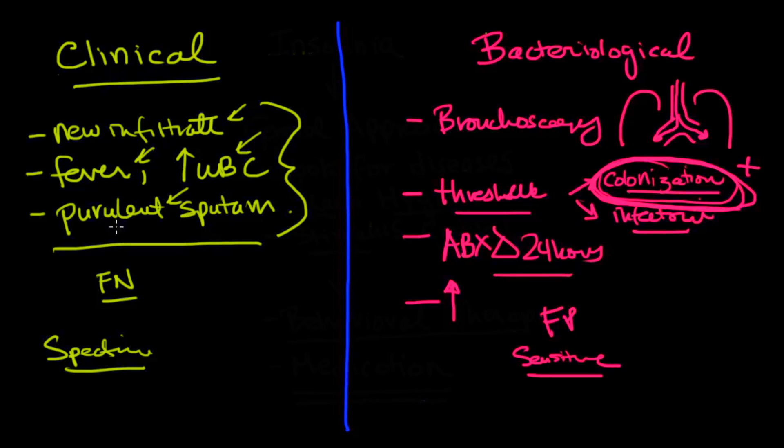In terms of what you should choose, the IDSA guidelines say you could use either one. Both are appropriate. Both are standard of care. If you don't have somebody doing bronchoscopy, then the bacteriological strategy is something you can't do. The clinical can be done fairly cheaply, and it can be done just about anywhere. The key is that if you're going to track ventilator-associated pneumonia rates in your hospital, you ought to stick with one definition and use it consistently, because how you define VAP can change your prevalence and your incidence of VAP.